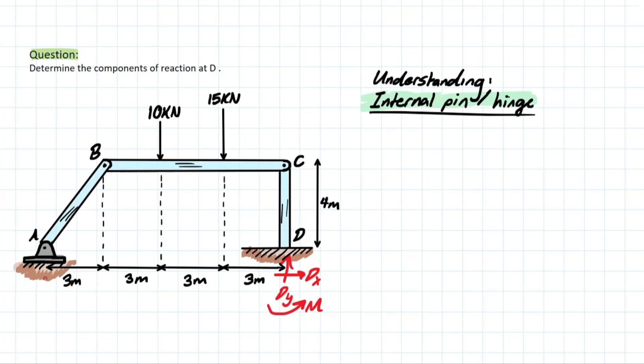And then we look over here as well, we have A, which is a pin, meaning we have A-Y and A-X. So you can clearly see that we have five reactions that need to be solved for potentially, but we only have three equilibrium equations to solve this problem. So how are we even going to start? Well, let's start by defining what a frame actually is.